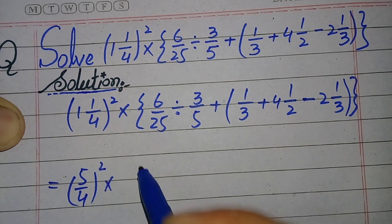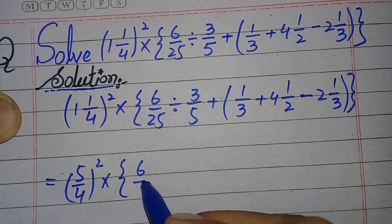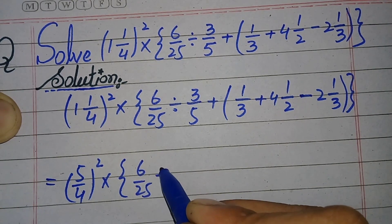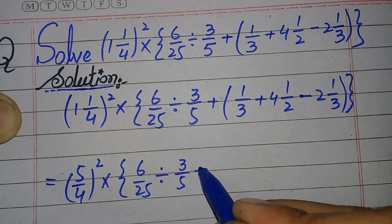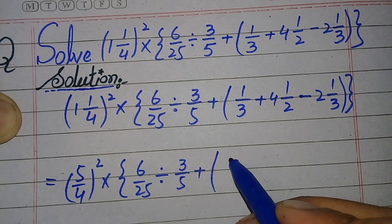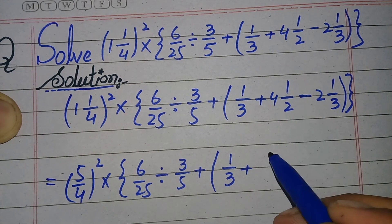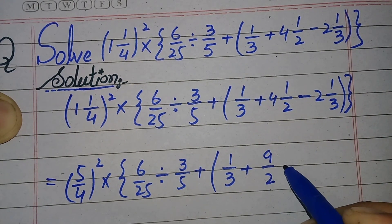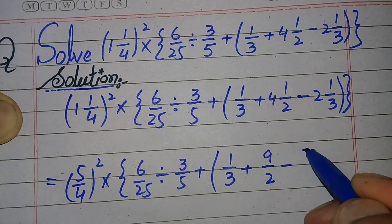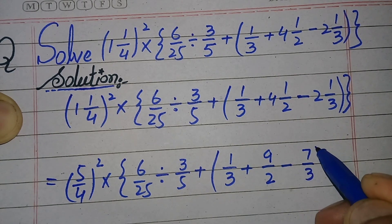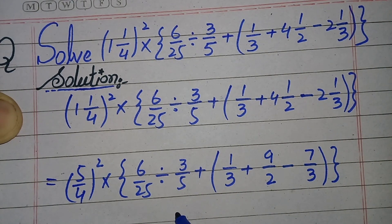That is 5 by 4 whole square, multiply, braces open, 6 by 25, divide, 3 by 5, plus, parenthesis open, 1 over 3 plus — 2 times 4 is 8, 8 plus 1 is 9, giving 9 by 2 — minus 3 times 1 is 3, 3 times 2 is 6, 6 plus 1 is 7, giving 7 by 3 — parenthesis close and braces close.